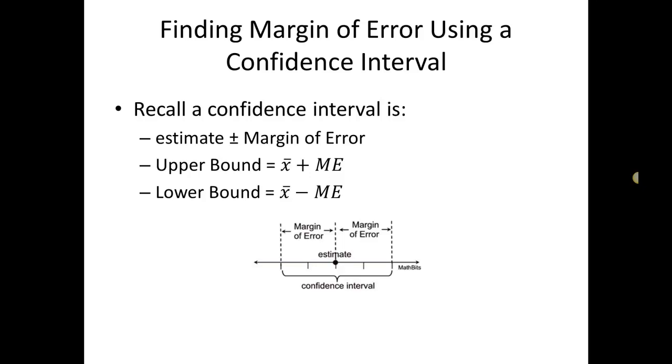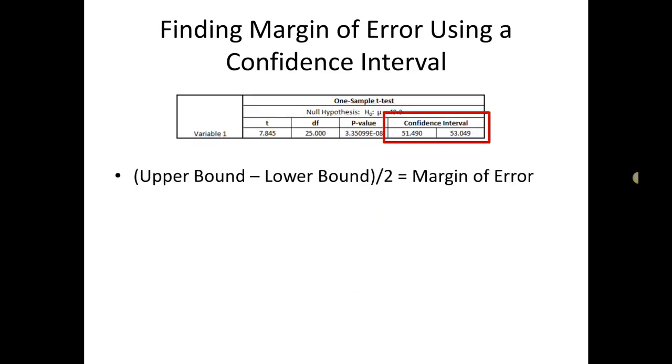So recall that a confidence interval is an estimate plus or minus a margin of error. That means that the upper bound is x bar plus the margin of error and the lower bound is x bar minus the margin of error. Looking at it that way, you can see that the distance from the lower bound to the upper bound is two margin of errors away from each other. So if we take the upper bound minus the lower bound, that distance, and then we divide that distance by two, we're going to get our margin of error.